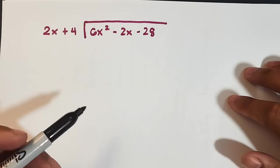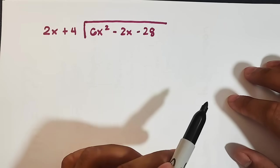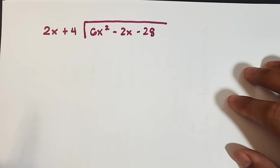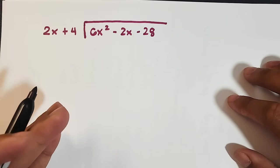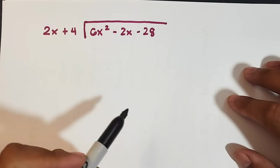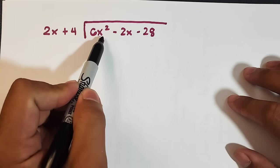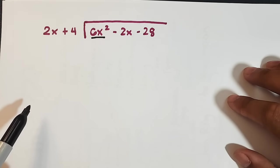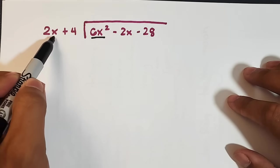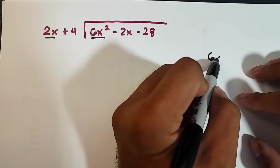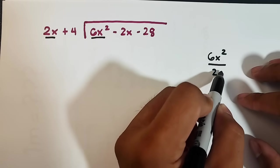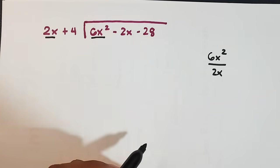First thing you need to do is to divide the leading coefficients of your dividend and your divisor. The leading terms. The first thing you need to do is to divide the leading terms of your dividend and divisor. This is the leading term of your dividend and this is the leading term of your divisor. So this will become 6x squared divided by 2x. I will use this part for our minimal solution or side solution.